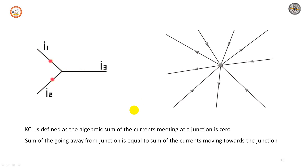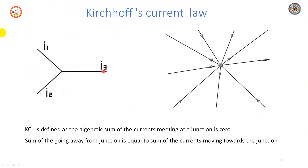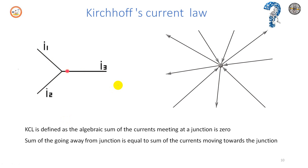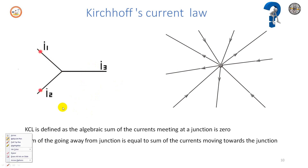The next principle is Kirchhoff's current law. If you look at this diagram, you can notice the current entering the junction. This center point is a junction. KCL can be defined as: the algebraic sum of the currents meeting at a junction is zero. That is, the sum of the incoming current is equal to the sum of the outgoing current. This is all about Kirchhoff's current law. The summation of I is equal to zero.